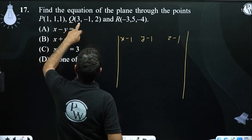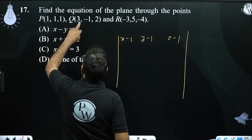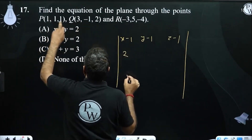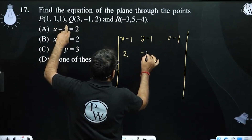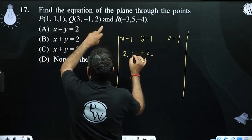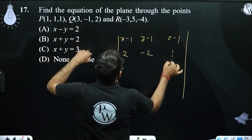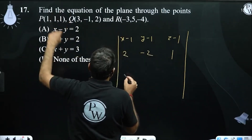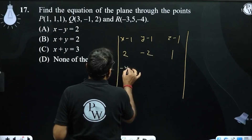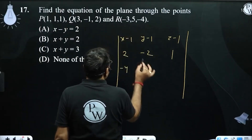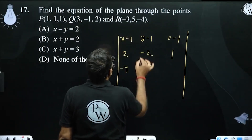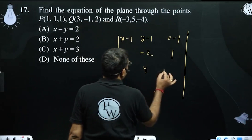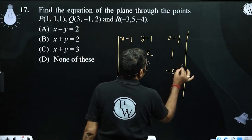Setting up the equation: 3 minus 1, 2 minus 1 or minus 1, minus 2; 2 minus 1, minus 3 or minus 1, minus 4; 5 minus 1, minus 4 or minus 1, minus 5.